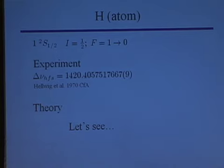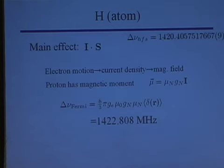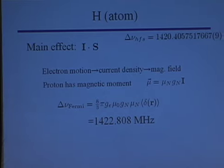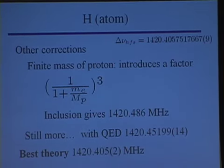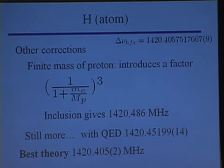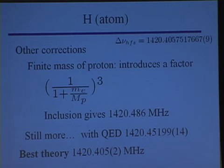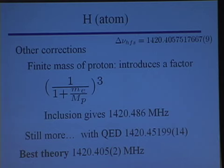As Bernard showed, the hydrogen atom has a very precise experimental value obtained with the Maser at the CFA for the hyperfine transition frequency. The theoretical status is not as good, but it's still pretty precise. You can do pretty well with the Fermi contact interaction, and even better if you include a naive correction, which is the reduced mass effect between the proton and the electron. Just including this factor, called kappa in the business, brings you down to 1420.486 MHz, so you're only 80 kilohertz away from experiment. Then QED and hadronic corrections, done by people like Saperstein and Pachucki and others, can bring you down to the best theory value, which has a 2 kilohertz uncertainty.